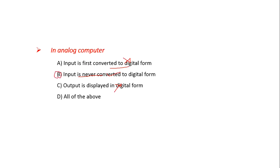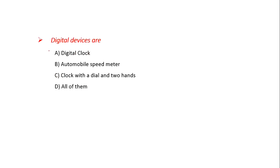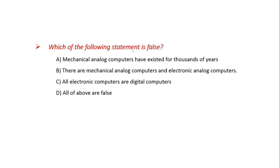Digital Devices are — Option A: Digital Clock — this is correct. Option B: Automobile Speedometer — this is wrong because it is an Analog device. Option C: Clock with a dial and two hands — this is also an Analog device, so it is also incorrect. The answer is A: Digital Clock.